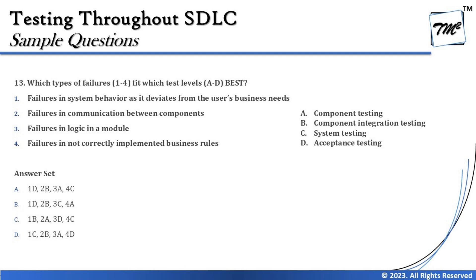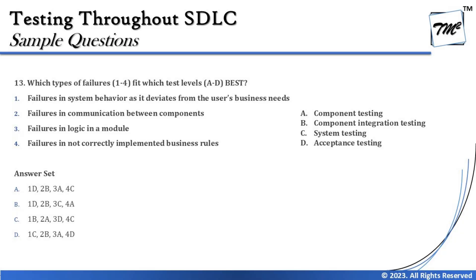Starting the comparison: failure number 1 is 'failures in system behavior as it deviates from user or business needs.' Business needs and user needs are typically covered in acceptance testing, because that's where end goals and user expectations are validated. In match-the-following type questions, the options can also help you eliminate confusion — some options won't match all four, which helps you narrow down quickly.